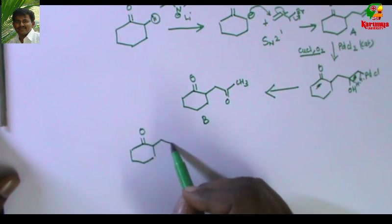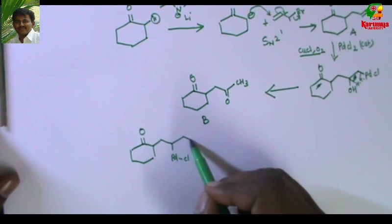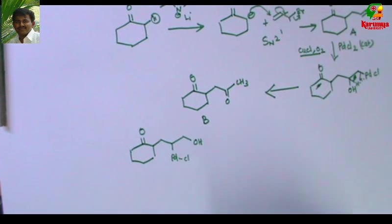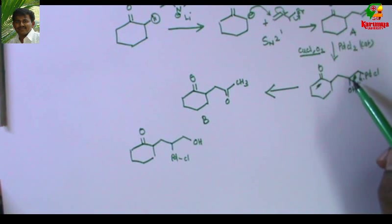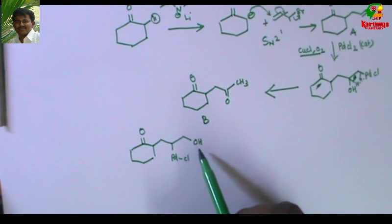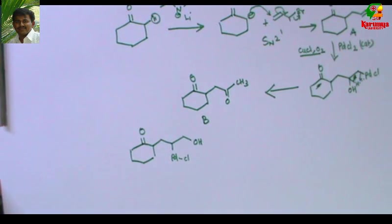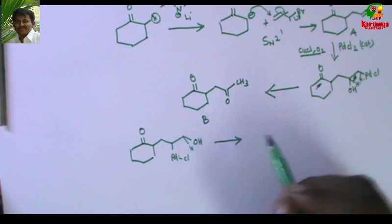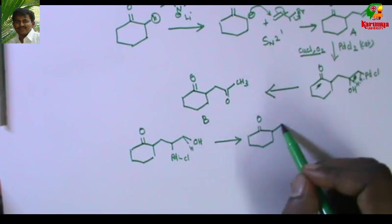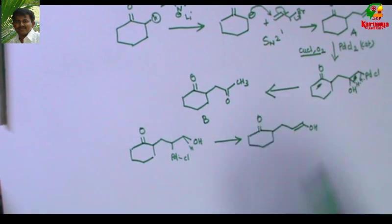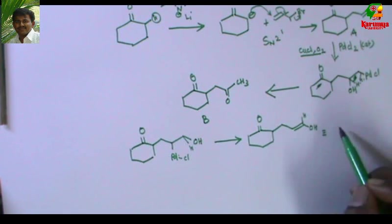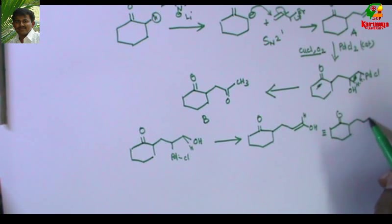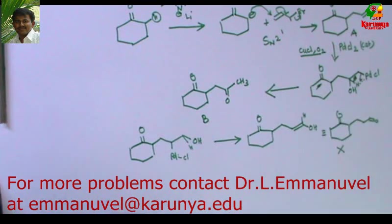Suppose the addition were anti-Markovnikov addition. In that case, water would attack the carbon with fewer hydrogens — but in anti-Markovnikov, the nucleophile attacks the carbon with more hydrogens. Palladium chloride would then undergo syn elimination to give a different product, which would be an aldehyde. However, this does not form because in the Wacker process, Markovnikov addition is strongly preferred.